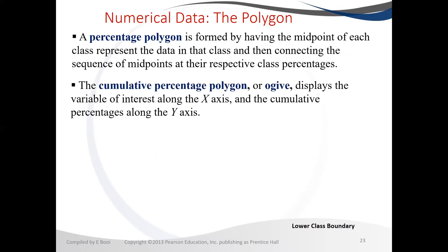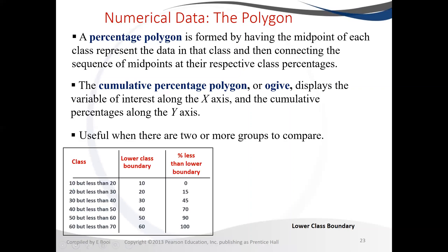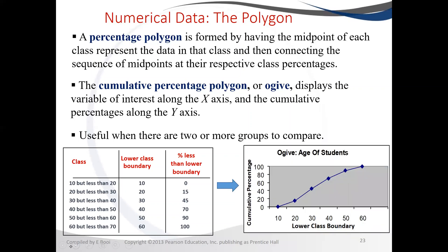There is also another type called the cumulative frequency polygon, also known as an ogive. To build it, we use the class boundaries — specifically the lower class boundaries — and calculate the cumulative percentages for those boundaries. The graph grows progressively because it accumulates, and that is your ogive. The difference from the percentage polygon is that the ogive increases continuously rather than going up and down.